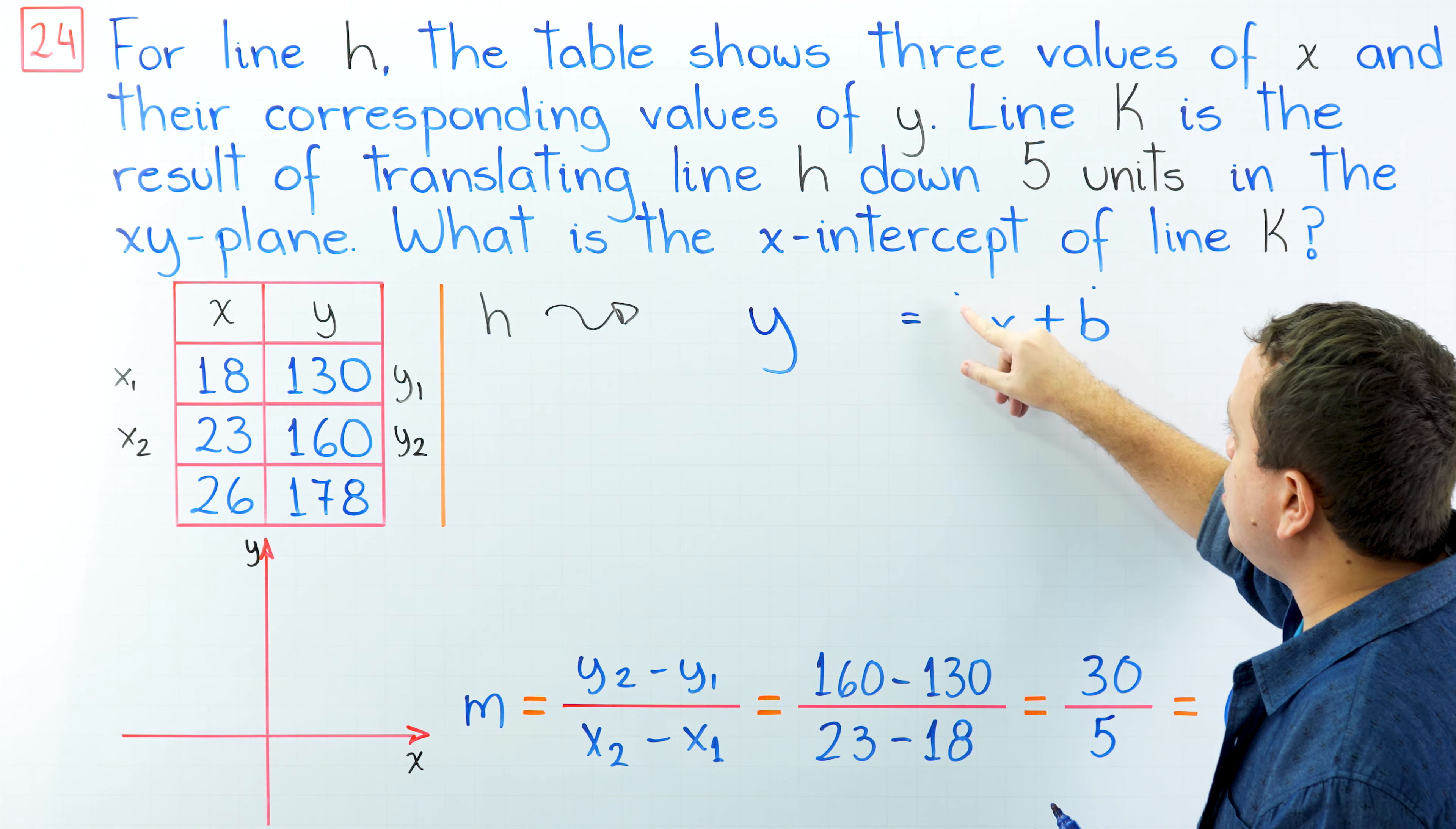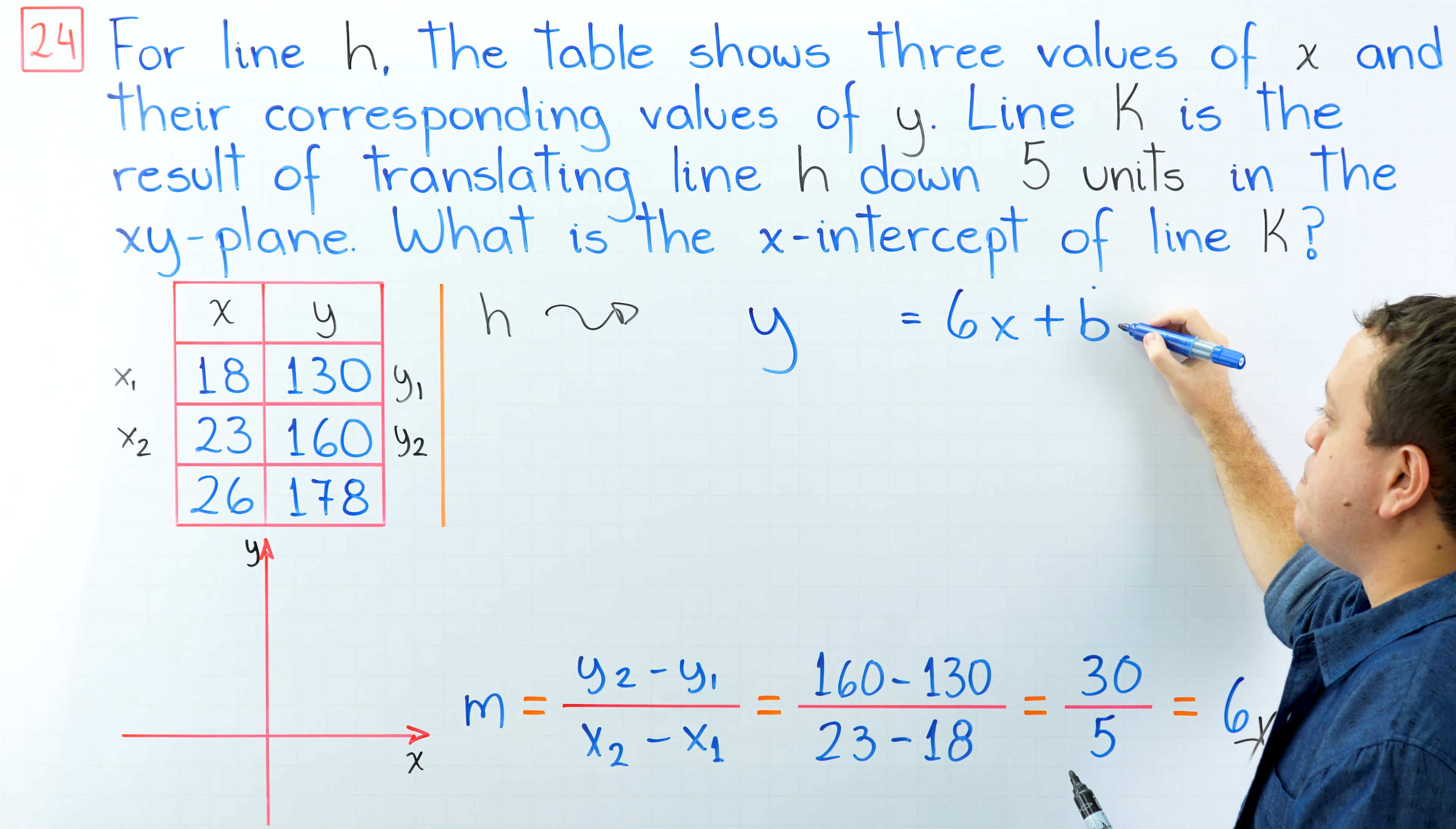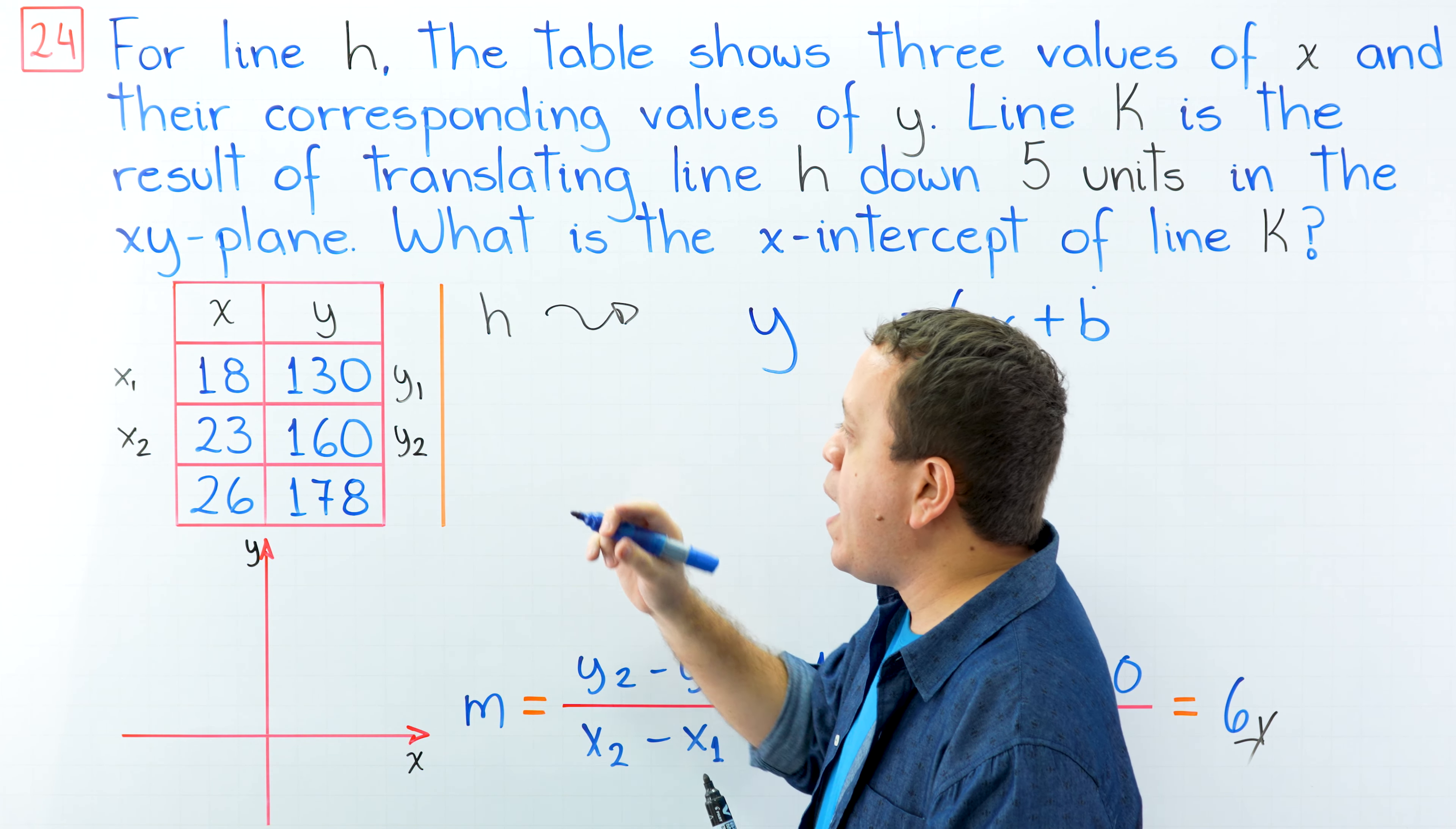Now we're going to replace that value in here. Instead of m, I'm going to write 6. And then we're going to find the value of b. To find the value of b, we need only one ordered pair, one point.